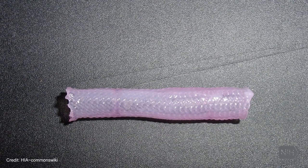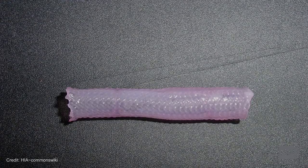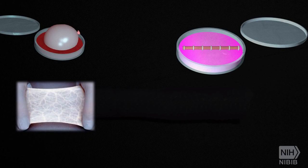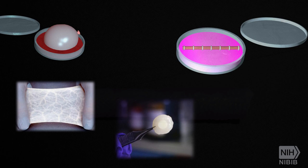Some examples of tissues and organs that have already been successfully tissue engineered and implanted in humans include bladders, small arteries, skin grafts, cartilage, and even a full trachea.